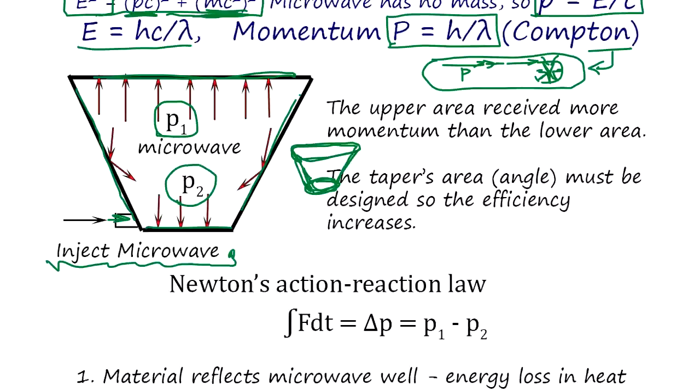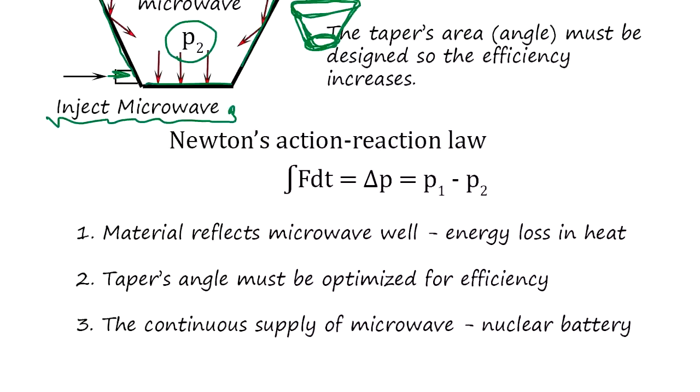Newton's action-reaction law is actually in the equation: the differential of momentum is the integration of force over time. Basically P1 and P2 have a differential in the momentum, so it creates upward force. Lower force is smaller. So that's how it works.